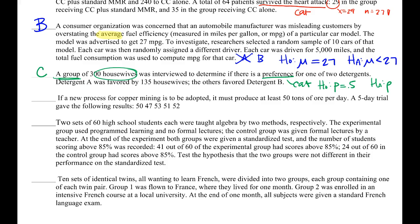A new process for copper mining must produce at least 30 tons of ore per day. We have a five-day trial with results. Amount of ore produced is quantitative, so we're doing one of the tests for means. It doesn't look like we have two samples — just one sample with this new process — and no sigma is given, so this must be another T-test, probably comparing whether the mean is at least 30 versus less than 30. Remember, 'at least' has greater-than-or-equal-to, which goes into our null.